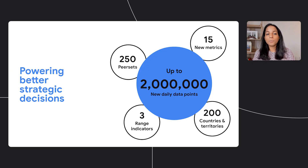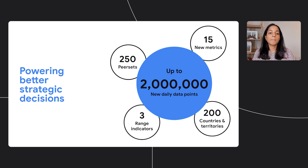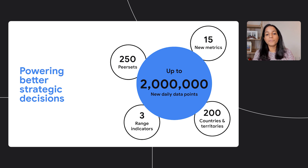And these aren't the only new metrics available to you. With 15 new metrics and data from up to 250 different peer sets across over 200 different countries and territories, Play Console now offers up to 2 million new data points a day to help you evaluate your performance. To get started, just look for the Compare to Peers tab on the statistics page.